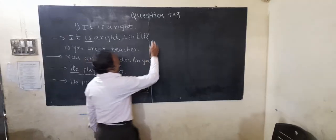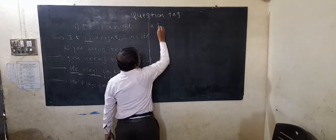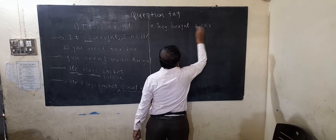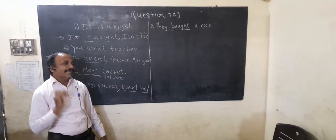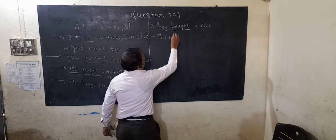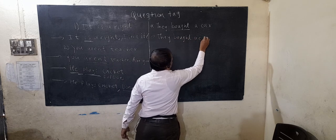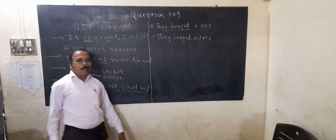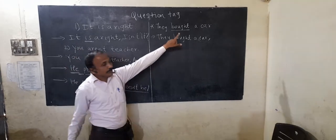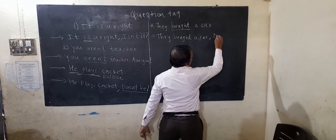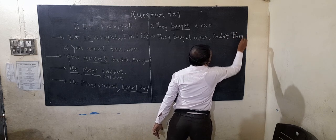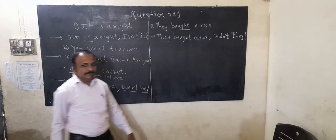Another example: 'They bought a car.' 'Bought' is past tense, so we use 'did'. Since the statement is positive, the question tag comes negative: 'didn't they?'